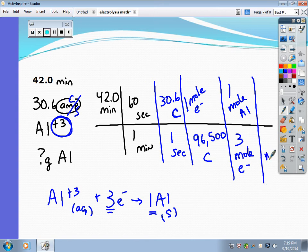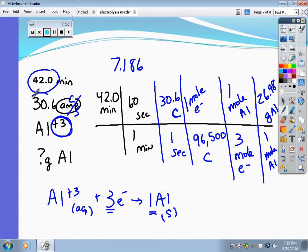Now what? Now I'm ready to change moles of aluminum into grams of aluminum. And in every one mole of aluminum on the periodic table, there's 26.98 grams. And now I'm ready to do my math. 42.0 times 60 times 30.6 divided by 96,500 divided by 3 times 26.98. And when I do that, I get 7.186. I've got three sig figs here and three sig figs here. What's the 6 do to the 8? It rounds it to 7.19 grams of aluminum. And that's how you do these problems.